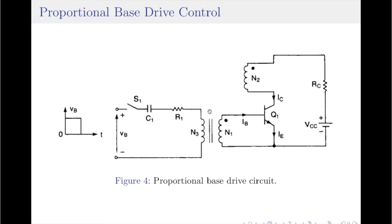In proportional base drive control technique, the base current IB changes in proportion to the collector current whenever there is a change in the load. When switch S1 is closed for a short duration, a pulse current of short duration is generated that passes through the transformer windings and drives the base of transistor Q1. The transistor Q1 turns on and enters saturation. When the collector current starts to flow, a proportional amount of base current is induced into the base transistor due to the transformer action. The transistor would then self-sustain due to transformer action and switch S1 can now be switched off.